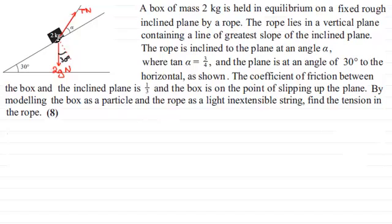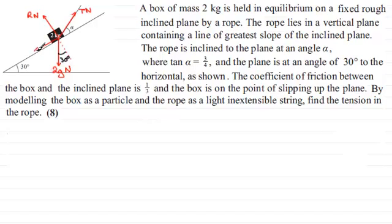What other forces act on the box? Because it's resting on a surface, there must be a normal contact force — we'll label that R Newtons for the reaction off the surface. Now we're told the box is on the point of slipping up the plane, so friction acts because it's a rough plane, and friction always opposes motion — so it acts down the plane. Because this is on the point of slipping, friction has reached its maximum value, mu R, where mu is one third. So this frictional force is one third R Newtons.